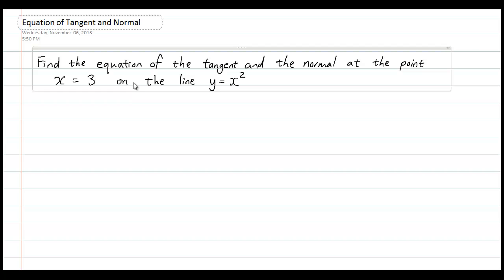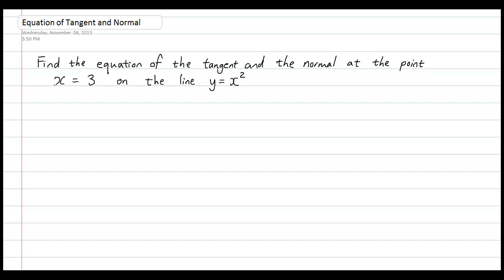Hey guys, welcome to another maths tutorial by The Magic Monk. We are going to get straight to the point today and solve a question on how to find the equation of the tangent line and the normal at a point on a curve. Let's start with the simplest curve y equals x squared and draw a tangent at x equals 3 on this curve.